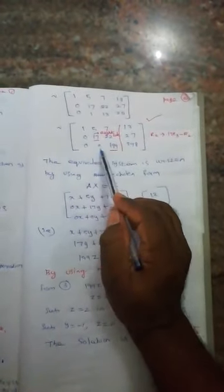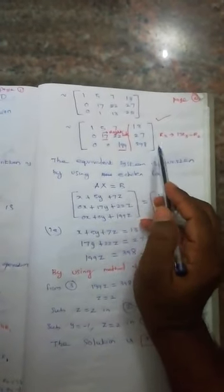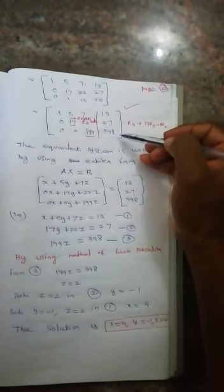To make the leading element of R3 zero, apply R3 → 17R3 - R2. The equivalent matrix becomes: R1 = [1, 5, 7, 13], R2 = [0, 17, 22, 27], R3 = [0, 0, 199, 398]. This 3×4 matrix is the final equivalent form.